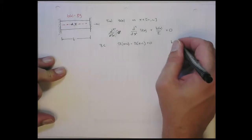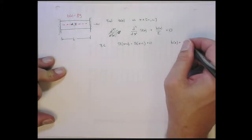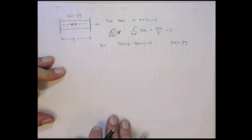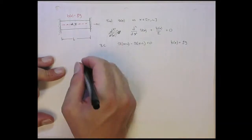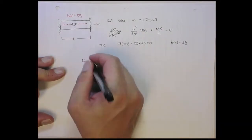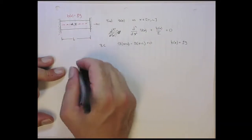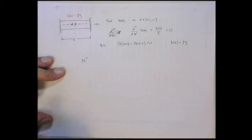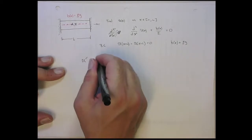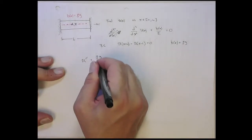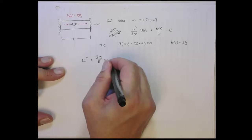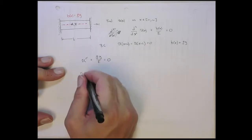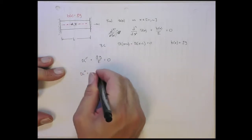So we know that b of x, in this case, is just ρg. So let's substitute that into here. So I have the second derivative of u with respect to x plus ρg over E equals 0, or the second derivative is equal to minus ρg over E.